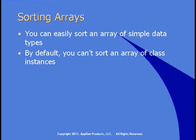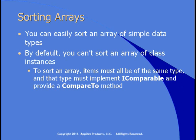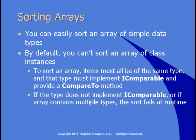However, you can store anything you want in an array, including instances of classes. And by default, you can't sort an array of class instances. So if you have a customer class and you have an array of customers, you can't sort that by default. In order to sort an array, the items must all be of the same type, and that type has to implement the iComparable interface and therefore provide a compareTo method. If the type doesn't implement iComparable, or if you have multiple types in the array, you can write the code to sort, but the sort fails.